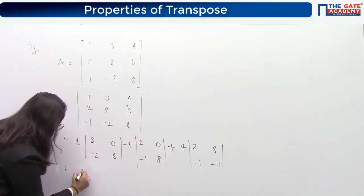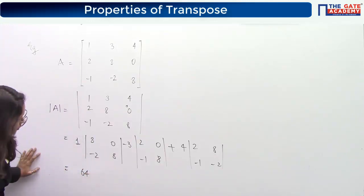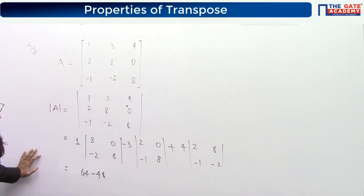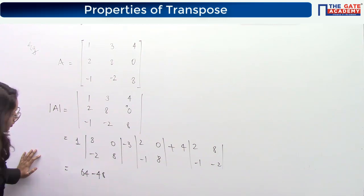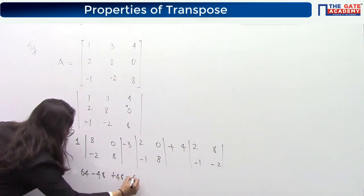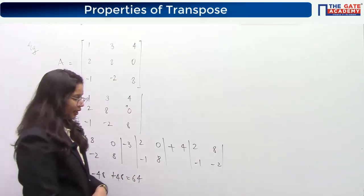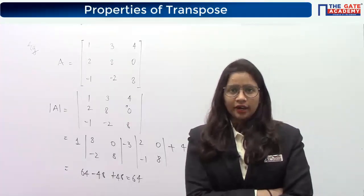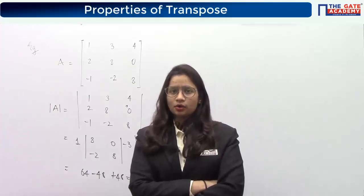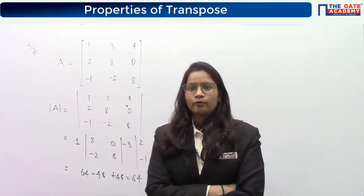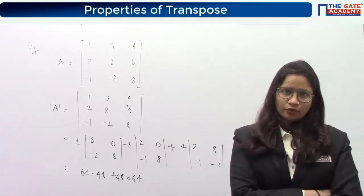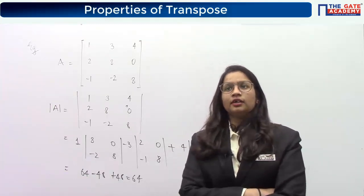Calculating the determinant of the given matrix: 1 times (8×8 minus 0) minus 3 times (2×8 minus 0×something) plus 4 times a minor. After computing: 64 minus 32 gives 32 as the value of this determinant. A matrix is said to be singular when its determinant is zero, meaning the area is zero, and it represents only a single vector.